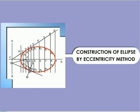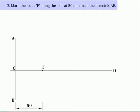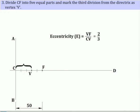Ellipse by eccentricity method. Draw the directrix AB and the axis CD. Mark the focus F along the axis at 50mm from the directrix AB. Divide CF into 5 equal parts and mark the third division from the directrix as vertex V.